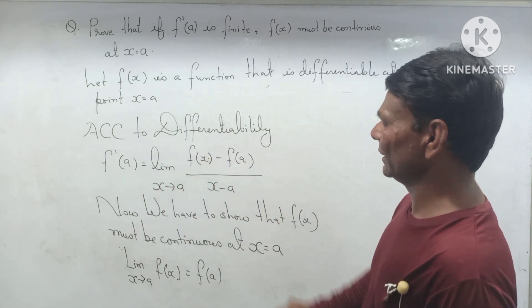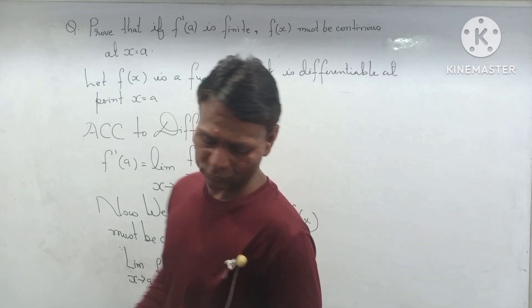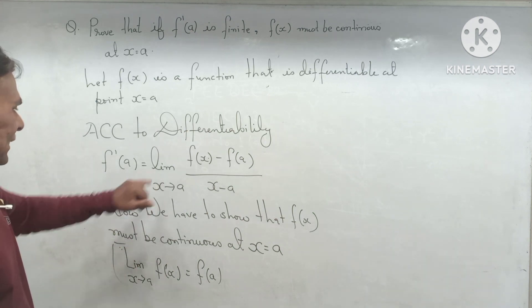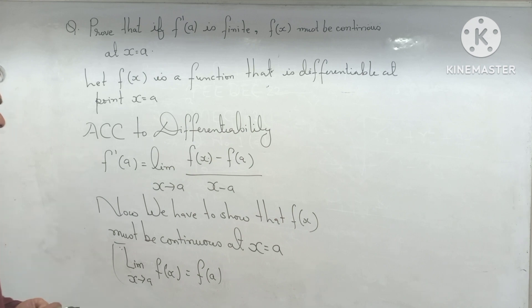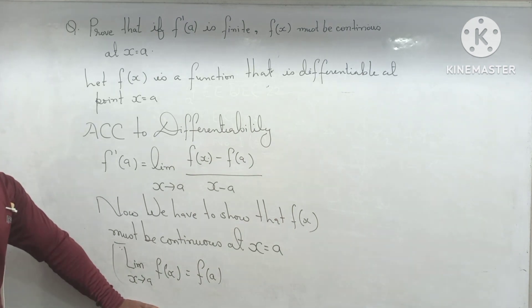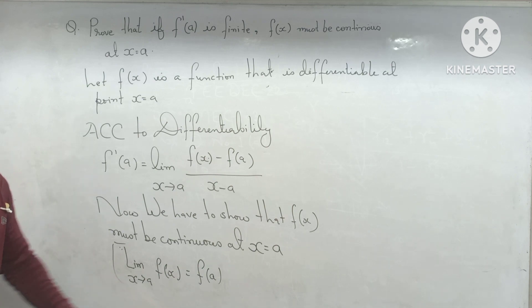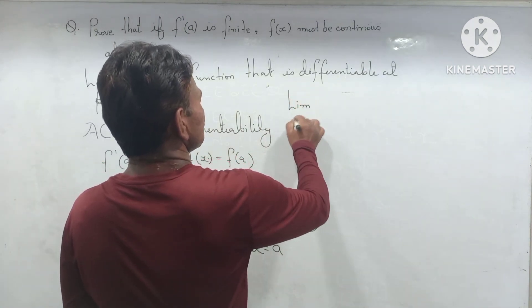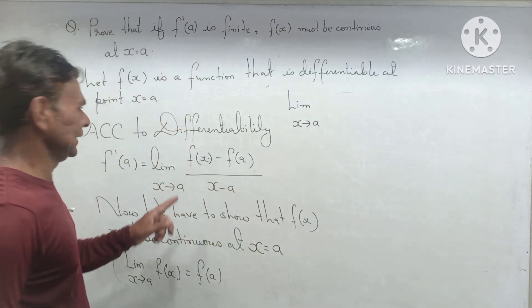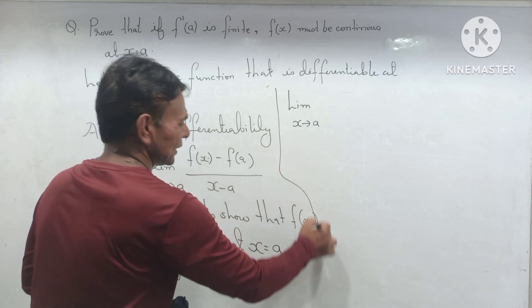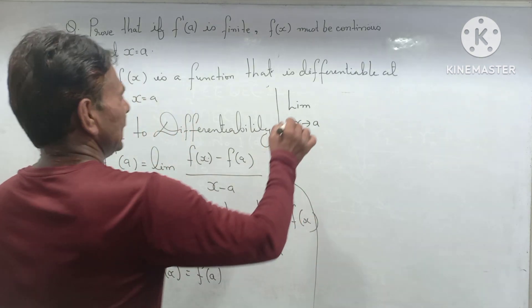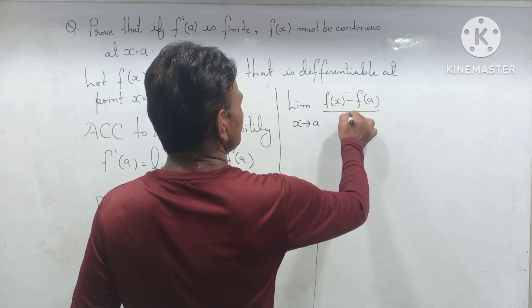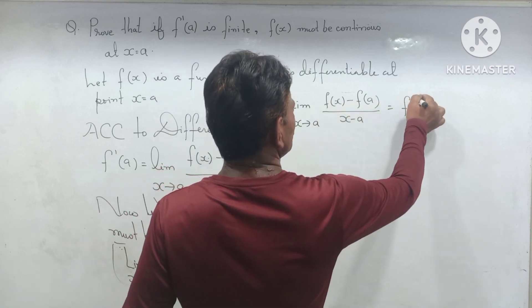If we prove it, then we will do it directly. We will take the relationship further. Let's start. We will use it. Limit as x tends to a, f(x) minus f(a) by x minus a equal to f dash a.